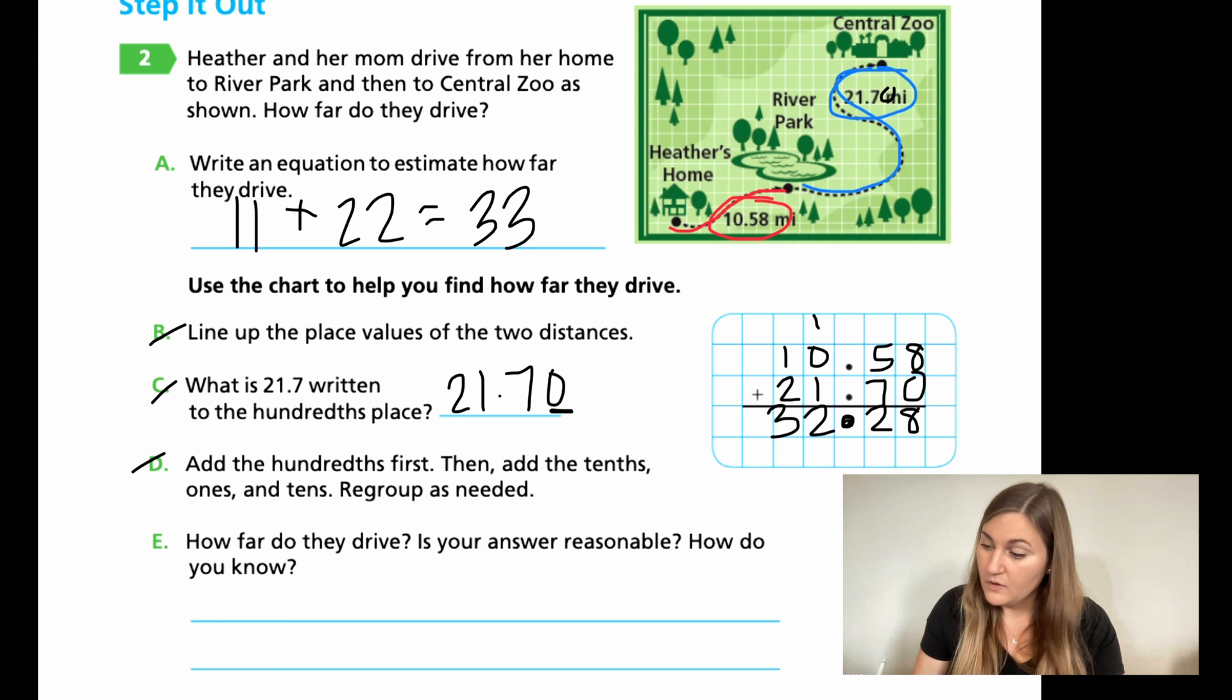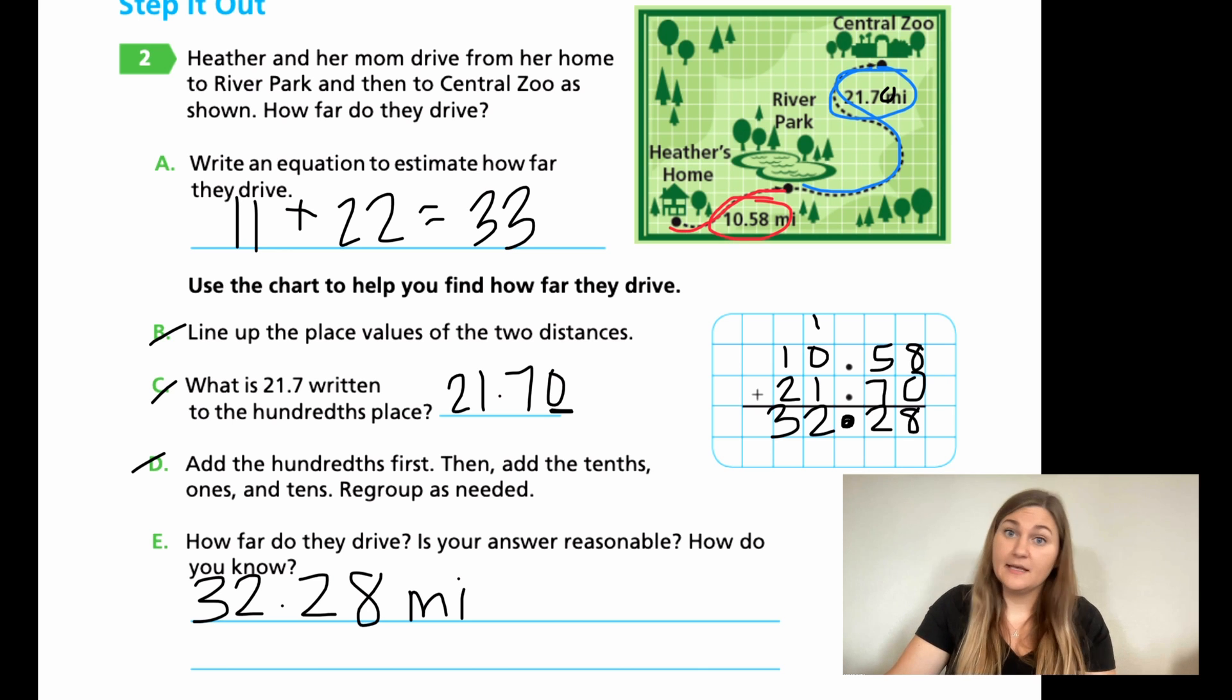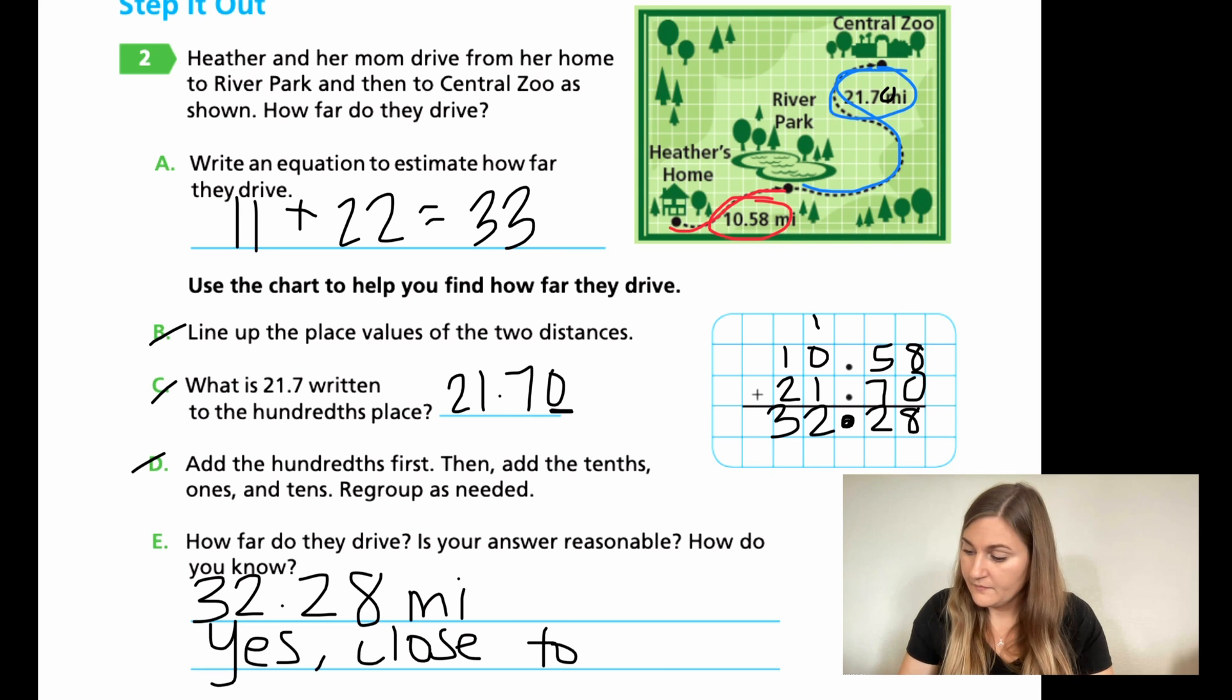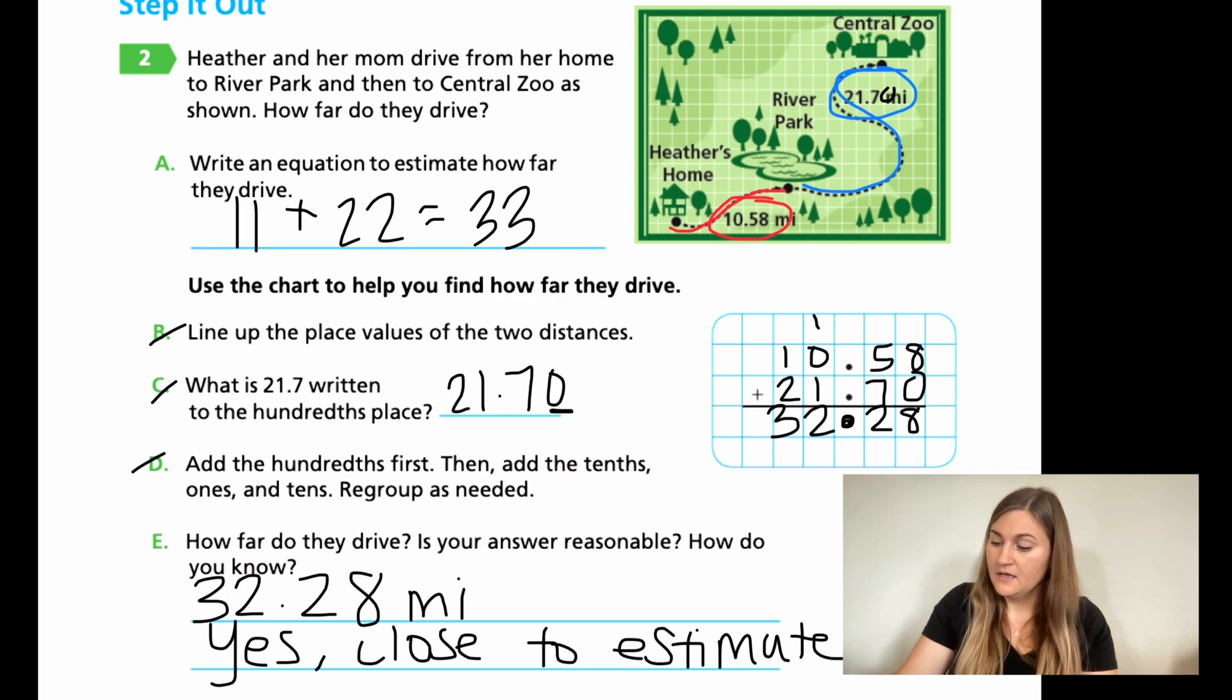Now it says, how far do they drive? Well, I know that my problem is in miles. So that's the unit I'm going to add on to the end. So 32.28 miles. How do you know if my answer is reasonable? Well, remember I estimated 33, 32.28. It's at least one away, right? It's less than one away. So I know it's very close. So is my answer reasonable? Yes. How do I know? Because it's close to the estimate. Go ahead and finish up the rest of your problems for this lesson. And I'll see you back for lesson five.